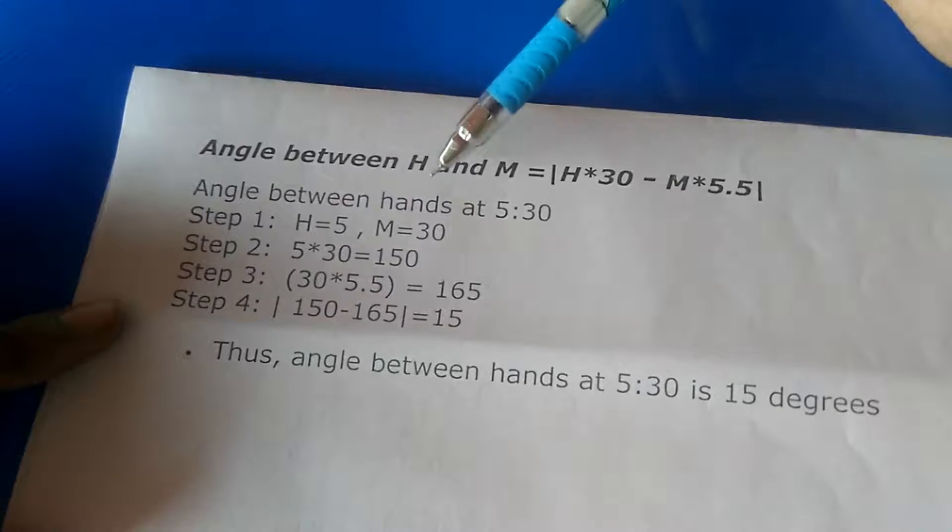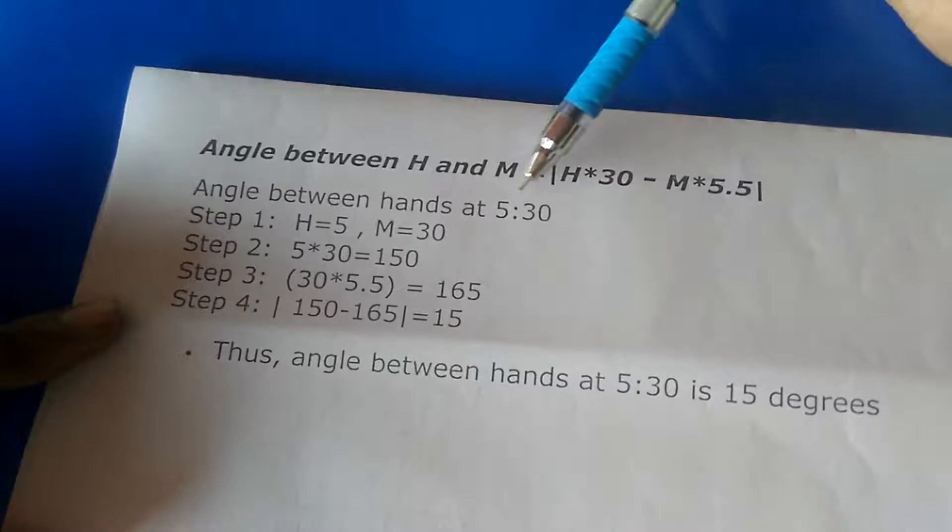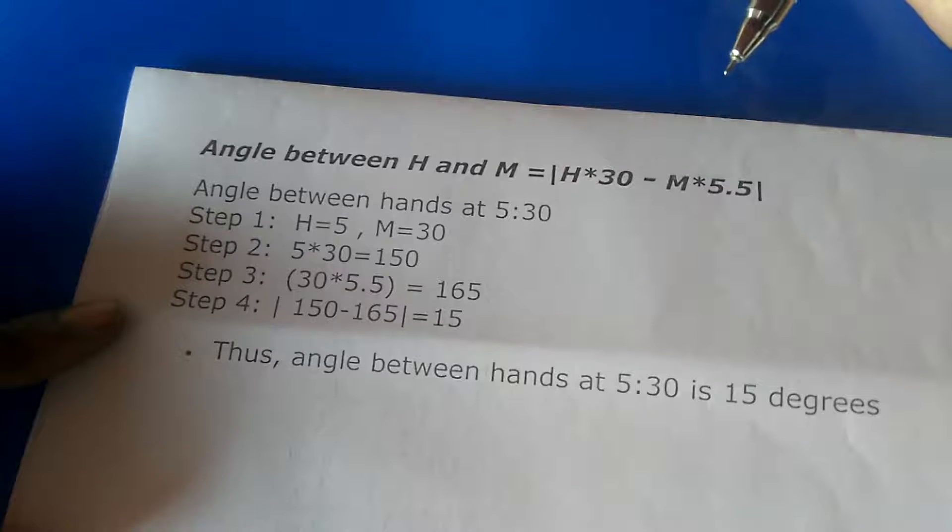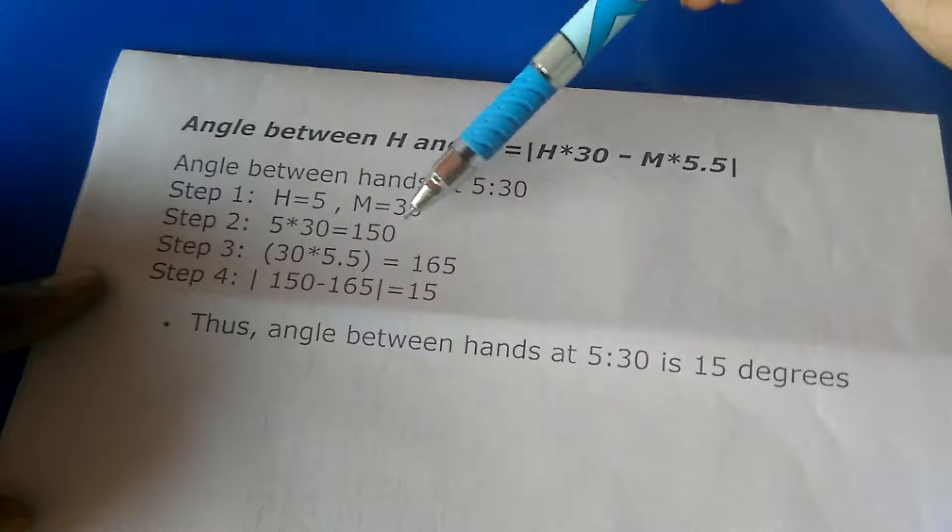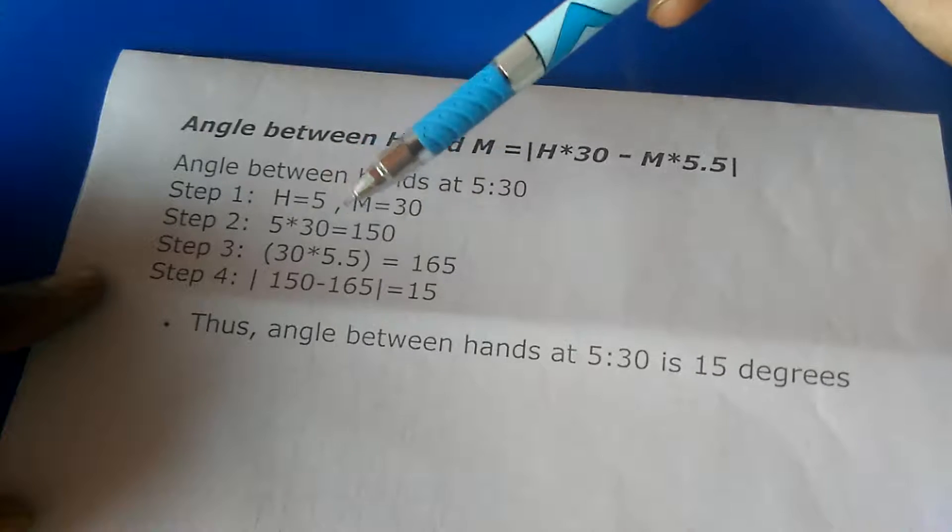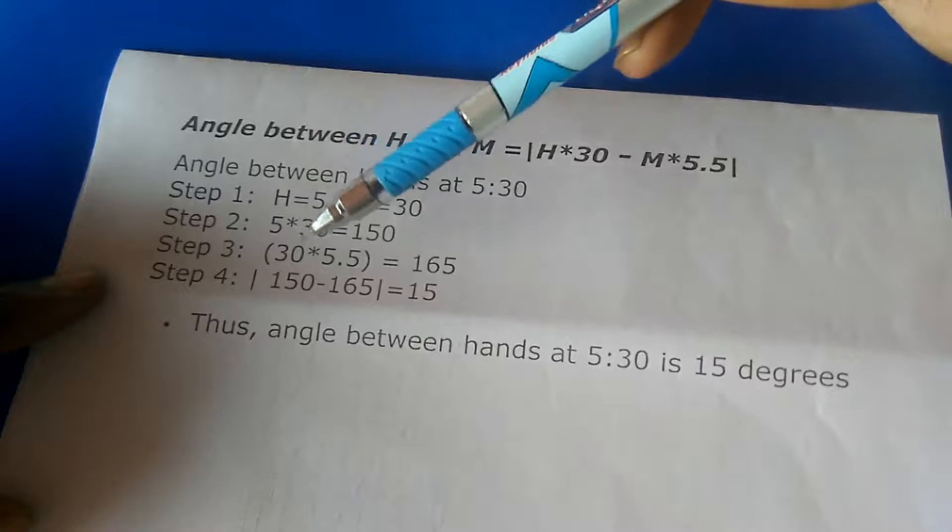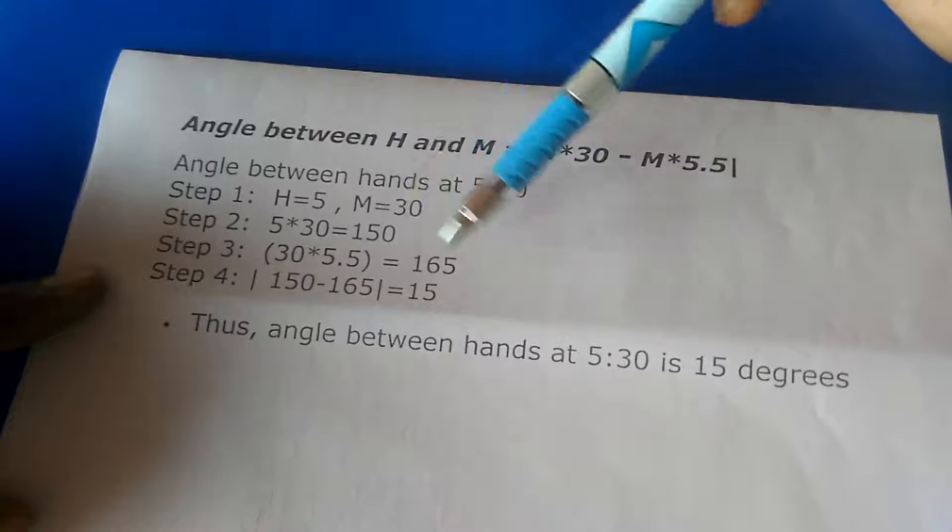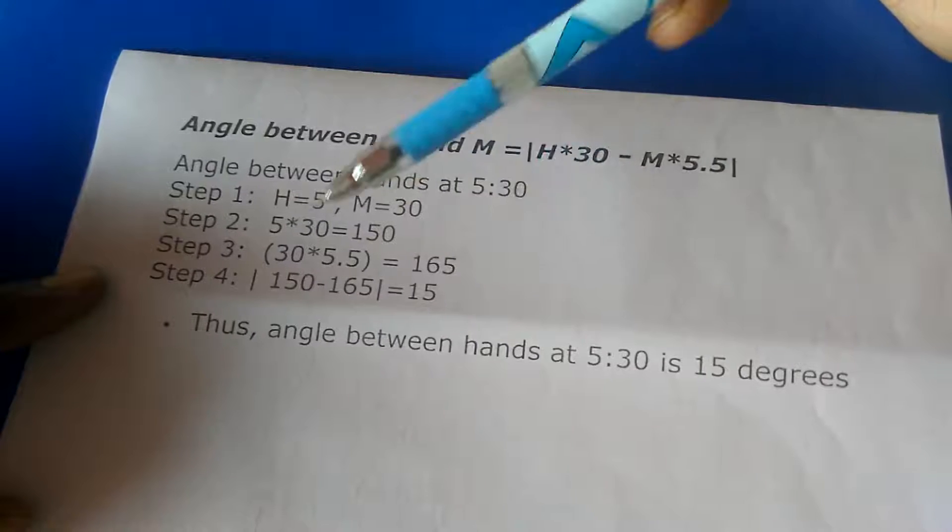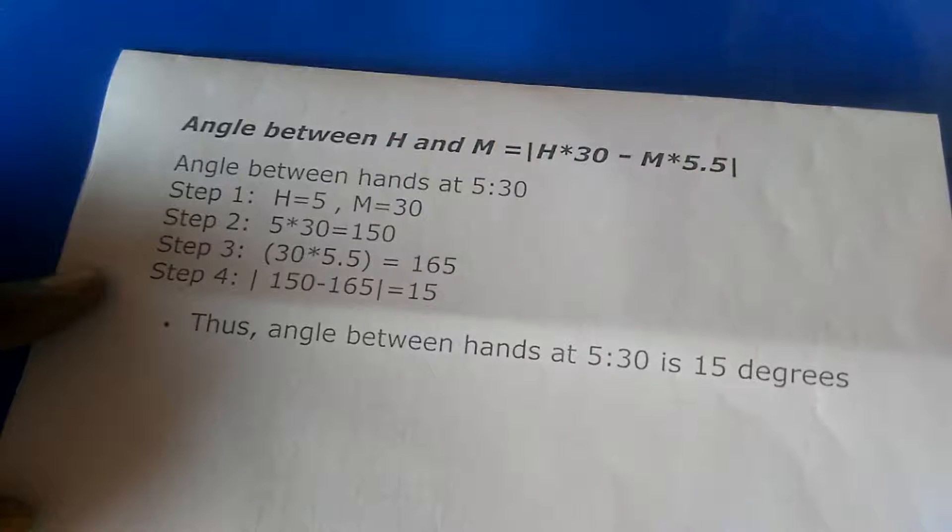For the angle between hands at 5:30, h is 5 and m is 30. Just place the value, plug and play, and you will get the angle between the hands at 5:30 is 15 degrees. Here h is 5, m is 30, then 5 times 30 equals 150. 30 times 5.5 is 165, and their difference should always be positive, that's why mod is here. Therefore, the angle between hands at 5:30 is 15 degrees.